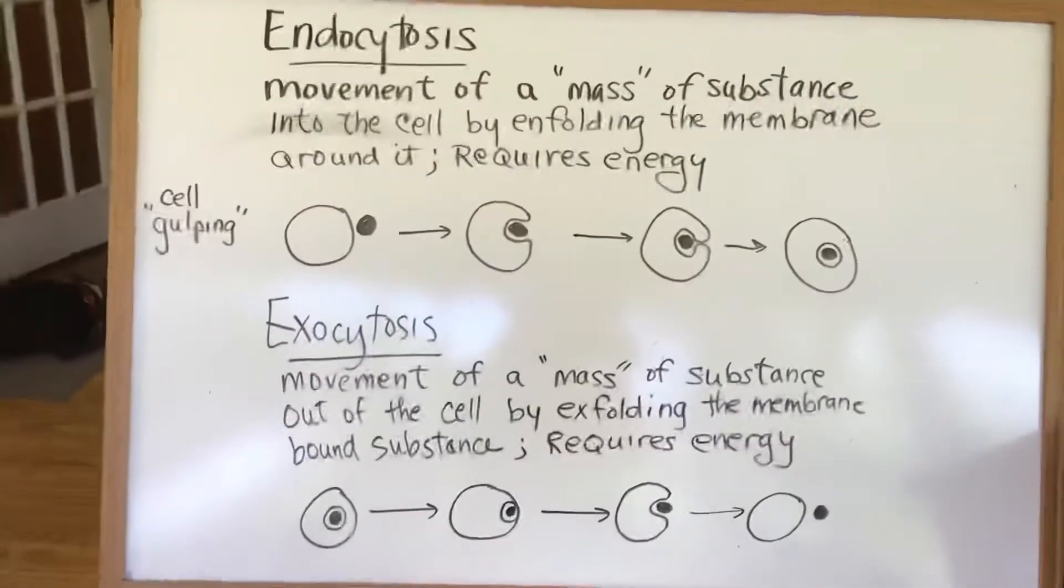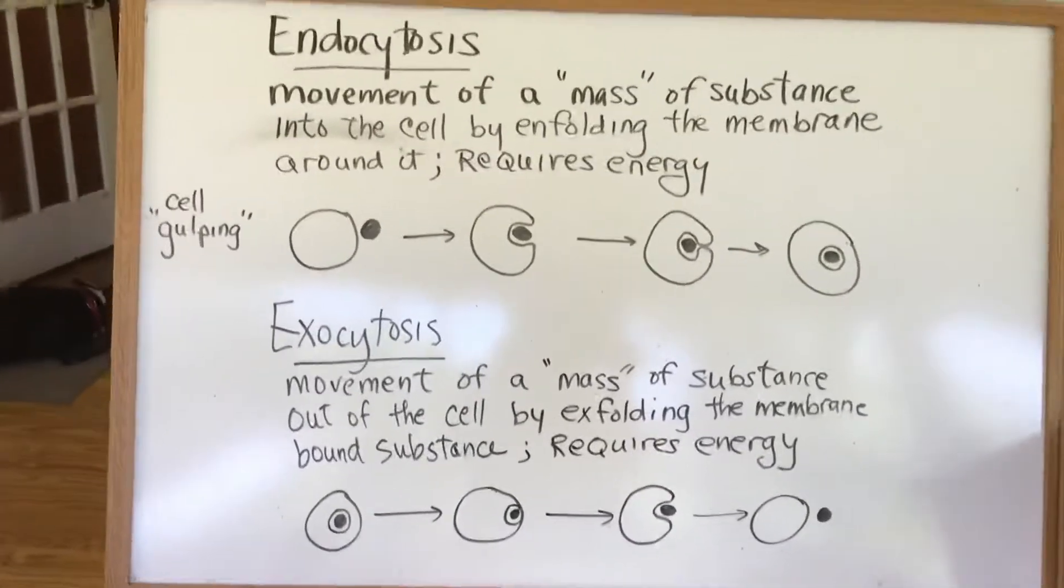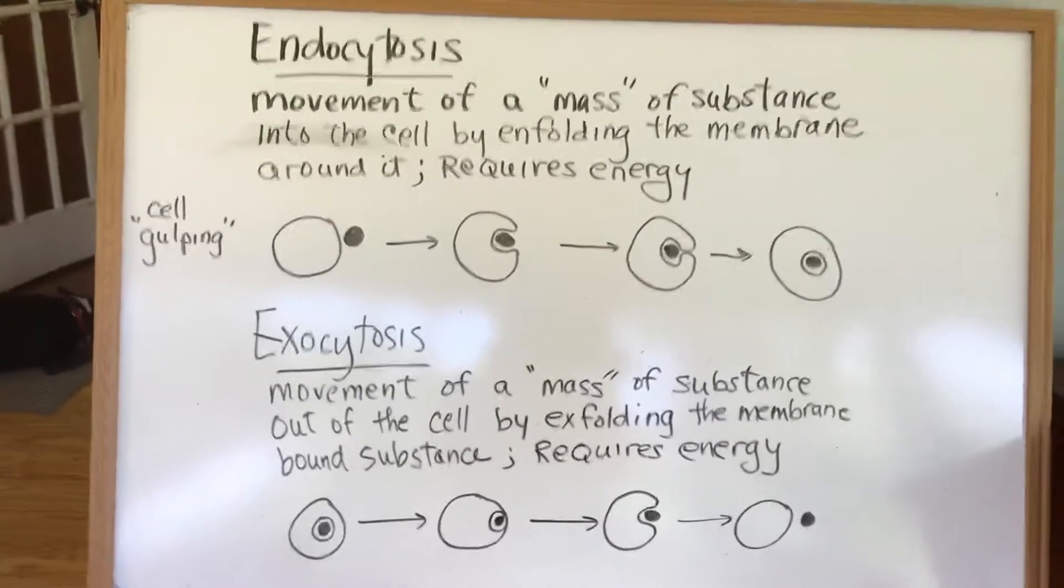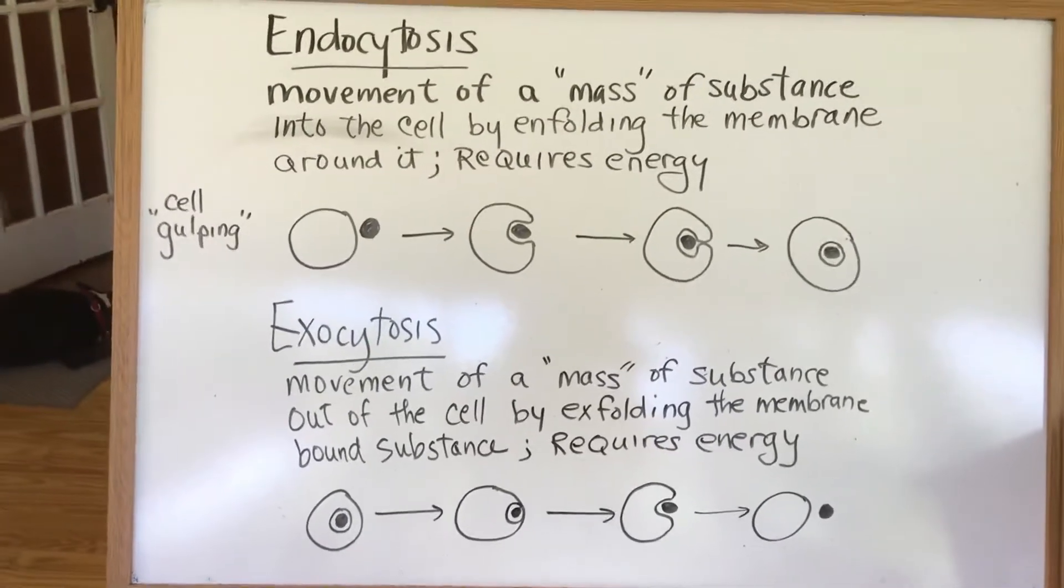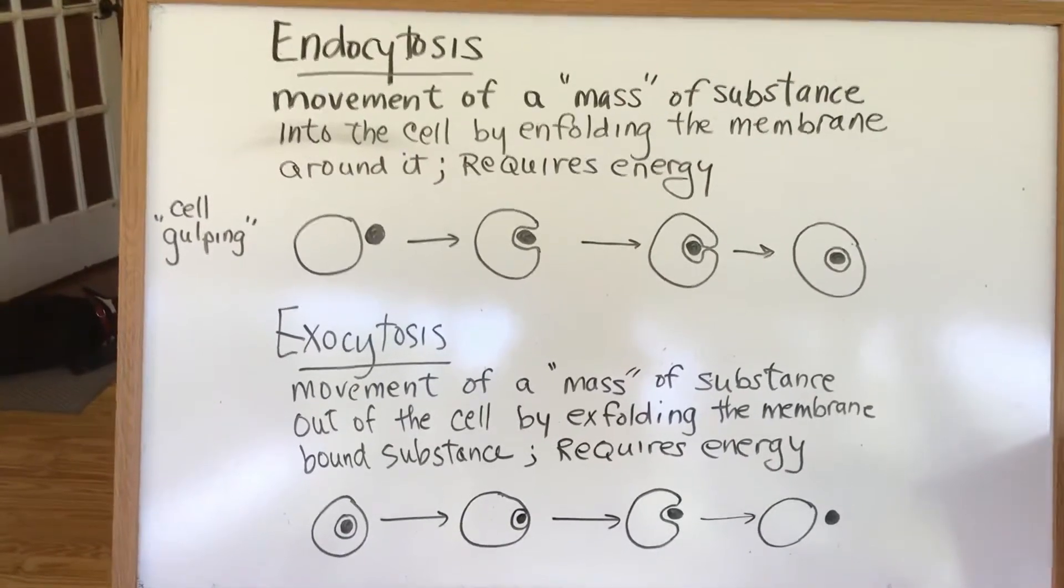The last two things we're going to talk about are the way things can move into and out of cells. These are called endo and exocytosis, and they're basically just the one is the reverse of the other.